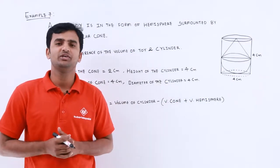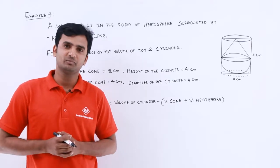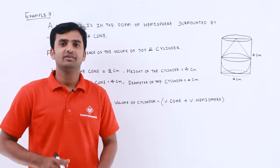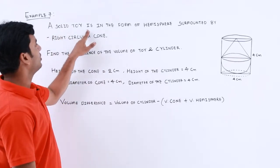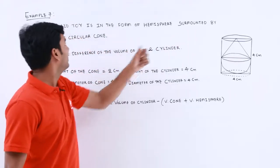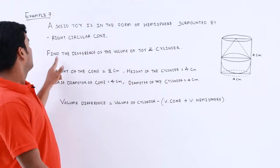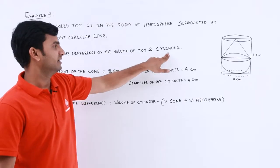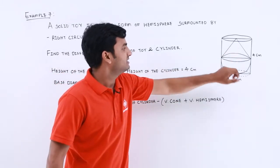Hello guys, in this video we are going to solve another problem based on the concept of volume of solids. In this question, it is given that a solid toy is in the form of a hemisphere surmounted by a right circular cone. We need to find the difference of the volume of the toy and the cylinder.